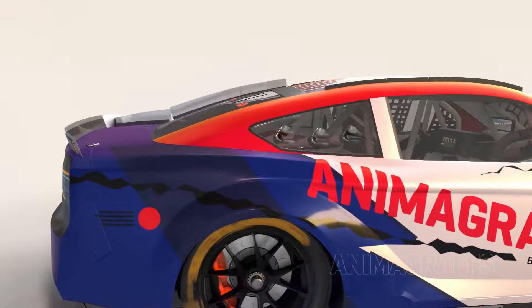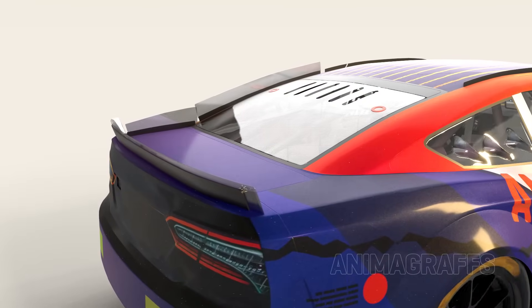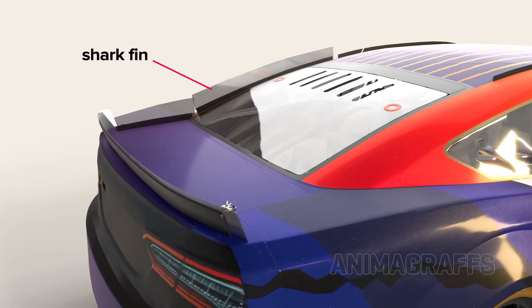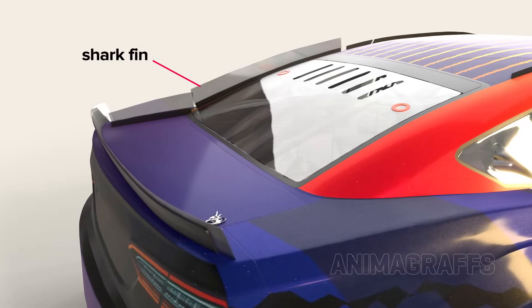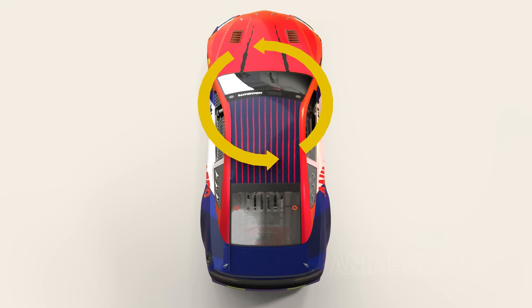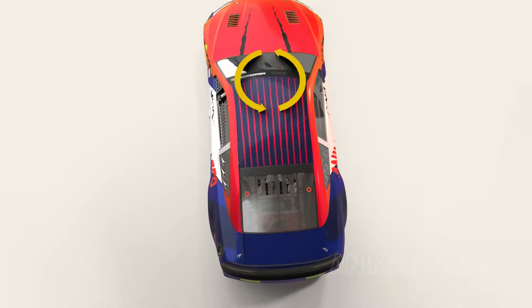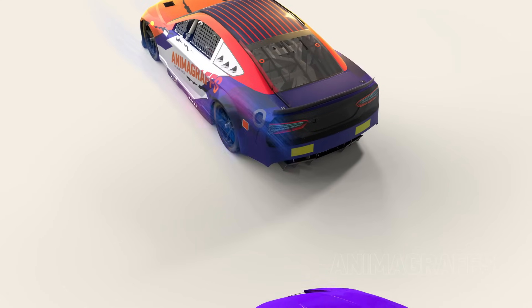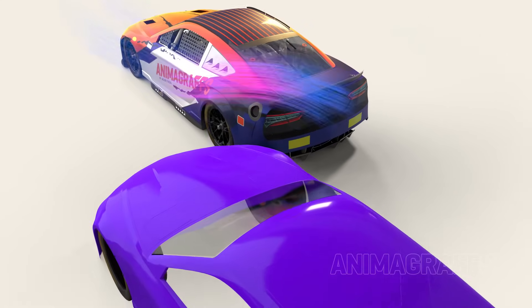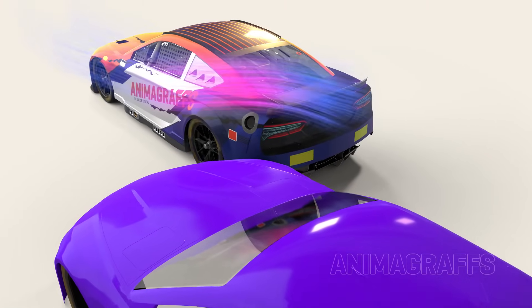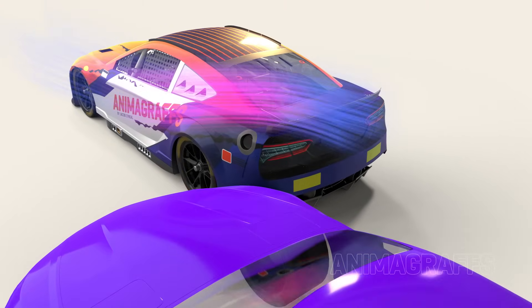For oval courses, where cars only turn left, a special spoiler, sometimes referred to as a shark fin, is installed on the driver side of the car to counteract yaw or rotational forces when cornering. The shark fin may also help mitigate the side drafting effect that happens when a following car is close to the rear quarter, pushing air over the lead car's rear spoiler and causing drag.